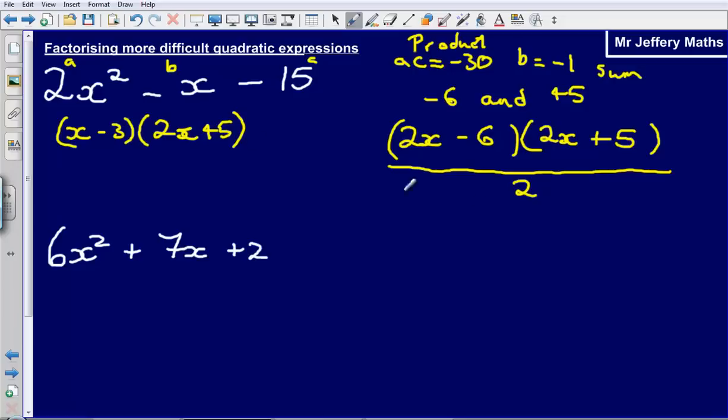All that I've done is I've divided this bracket here, this 2x minus 6 by 2. So 2x minus 6 divided by 2, that gives me the x minus 3. And then 2x plus 5 just stays as it is. And this is my fully factorized version of this quadratic expression.